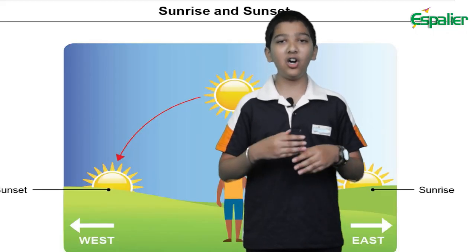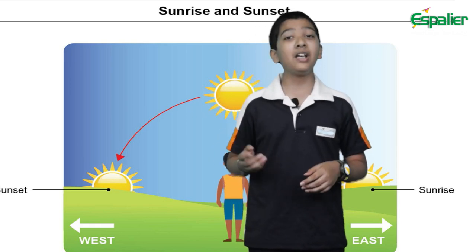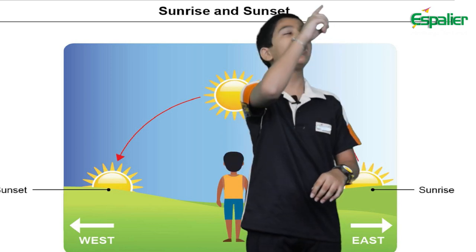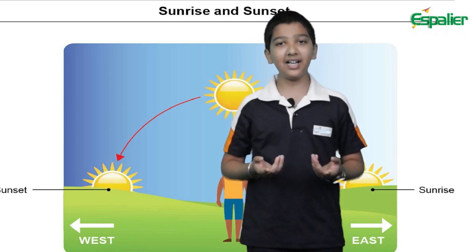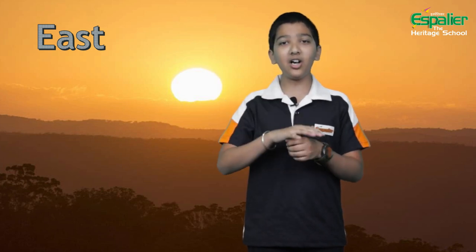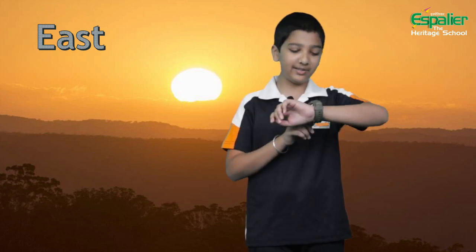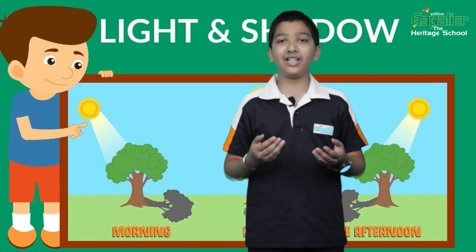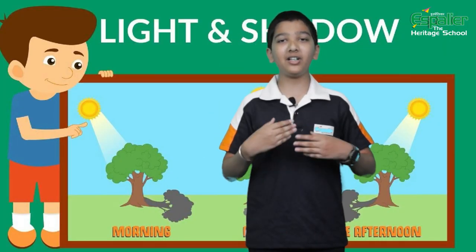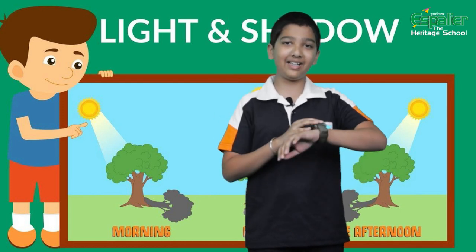First, we all know that the sun always rises in the east and sets in the west. Therefore, you can tell the time just by looking at the sun's location in the sky. When you look at the east and the sun is on the horizon, it means that the time is approximately 6 am. If the sun is about 45 degrees above the horizon in the east, then the time is approximately 9 am.